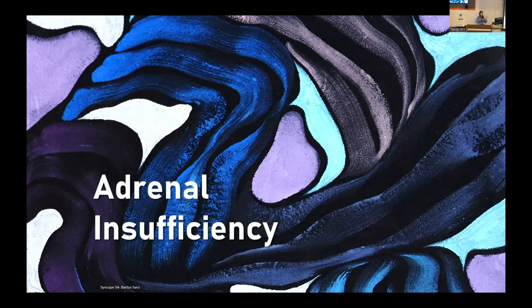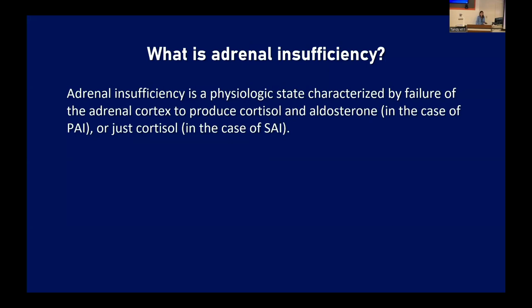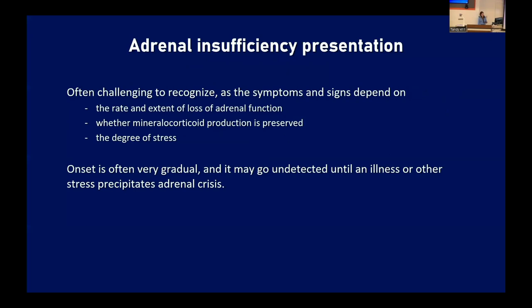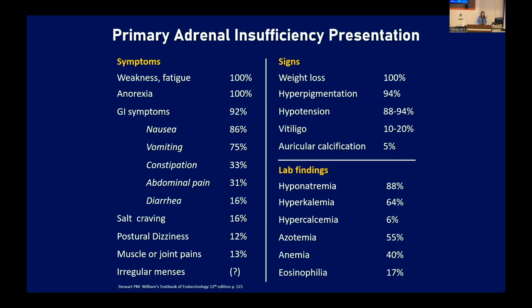Now switching to low adrenal states — adrenal insufficiency. This is a physiologic state characterized by failure of the adrenal cortex to produce cortisol and aldosterone in primary insufficiency, or just cortisol in secondary. These are often very hard to recognize. Signs and symptoms depend on how quickly adrenal function was lost, the extent of remaining function, whether it's primary with lost mineralocorticoid production or secondary with preserved production, and the degree of stress. Onset is often gradual — patients may have had vague symptoms for years, and it typically goes undetected until an illness or stress precipitates a crisis.